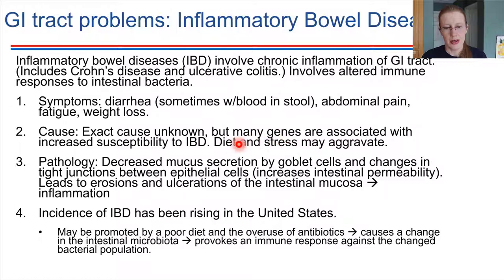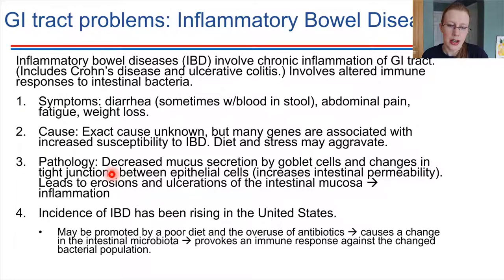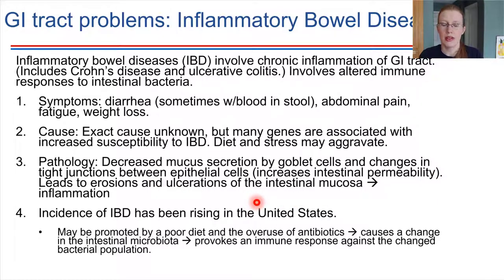Both diet and stress can play into the microbiome — we know that diet affects the microbiome. As far as pathology goes, the end result is decreased mucus production, which leads to other changes. There are also changes in the tight junctions; fewer tight junctions means more permeability, which is not a good thing. That can lead to erosions of the mucosal lining of the intestines and consequently inflammation, making it hard to get back under control.